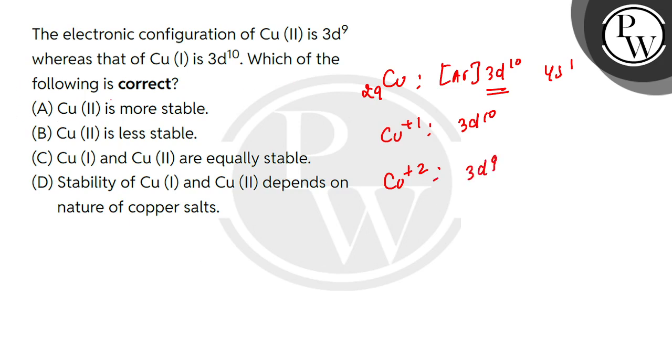Which of the following is correct? Here we have written that Cu2+ is more stable - that's false. Cu1+ is less stable - false. Cu1+ and Cu2+ are equally stable - false. The stability of Cu1+ and Cu2+ depends on the nature of the copper salt.